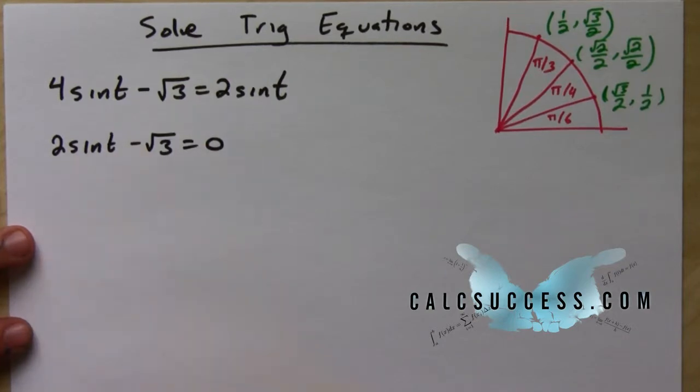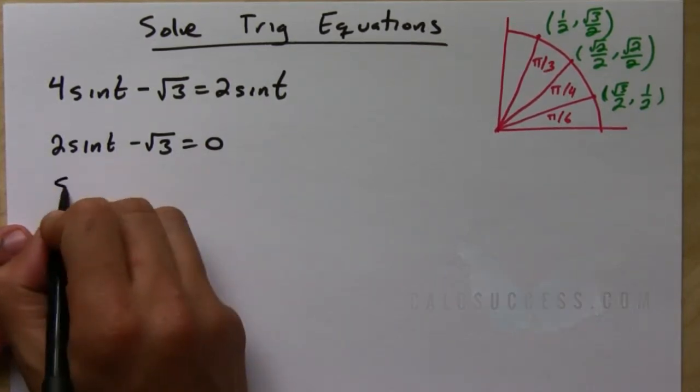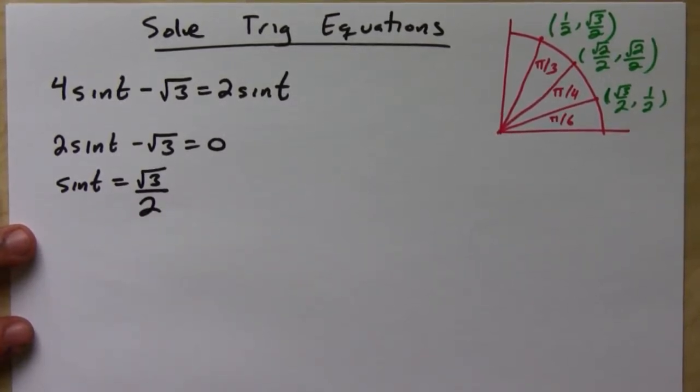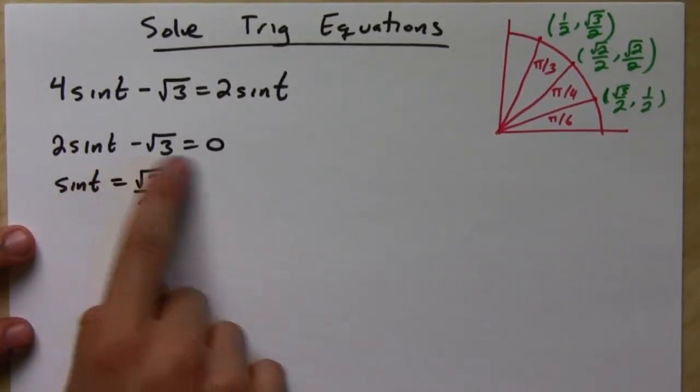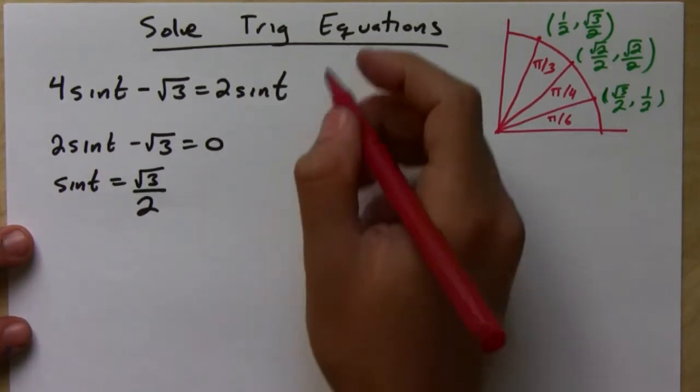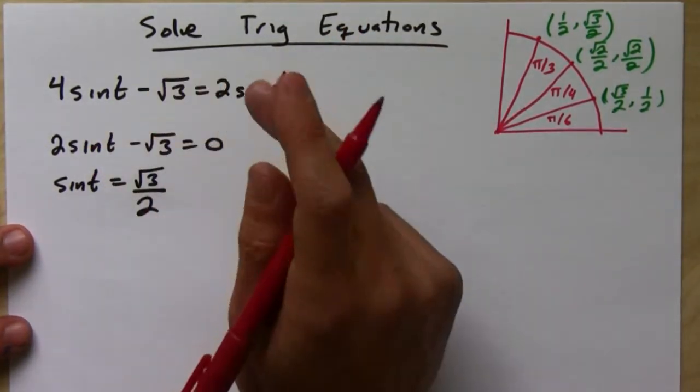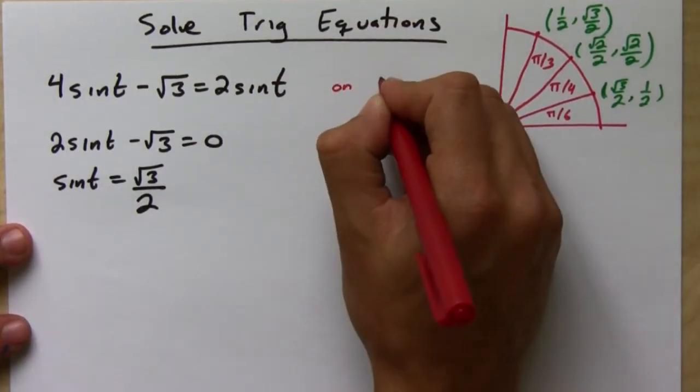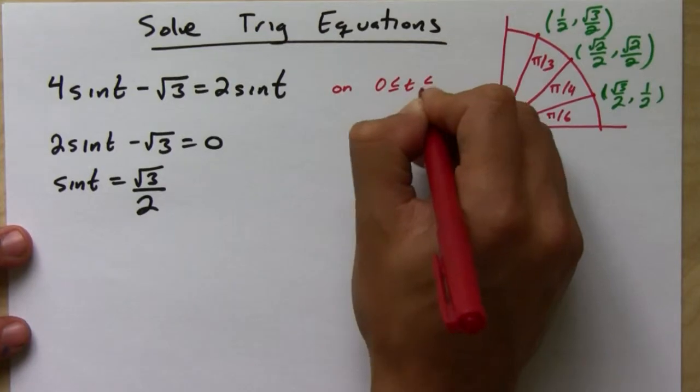But you need to have these in your head so that you can do all the problems. All right. And then we have 1 half square root of 3 over 2. Okay. So now, let's solve for sine of t. So sine of t equals square root of 3 over 2.